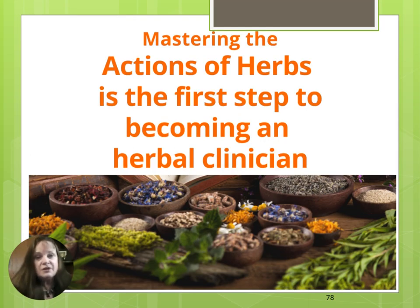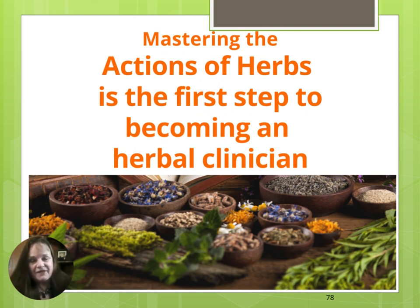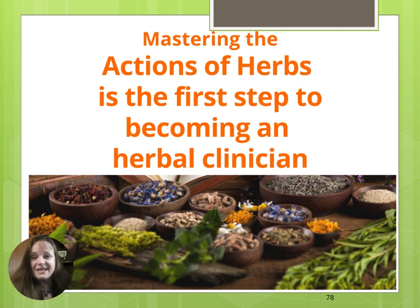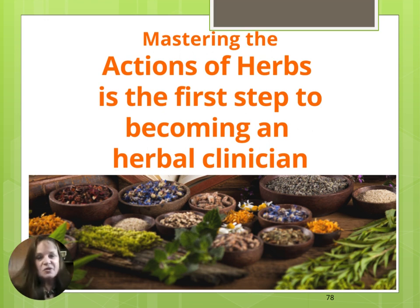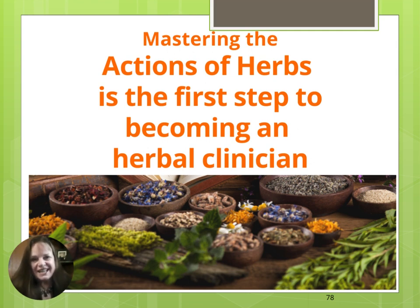Learning individual actions of herbs is an important step in mastering herbal medicine to become an effective clinician and put together effective formulas. For example, treating IBS, treating diabetes, treating arthritis — you don't want to just put into your formulas every herb you ever heard was good for diabetes or good for arthritis, but instead ask yourself: what actions do I want my formula to perform? And you will end up putting together much more effective clinical formulas.